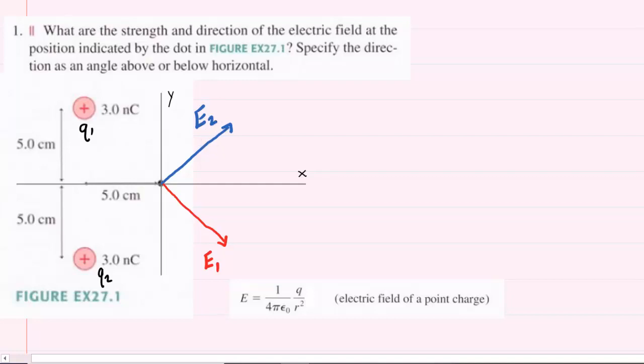After drawing in the electric fields, we want to consider the x and y components of those electric fields. For E1, we would have an x-component that's pointing along the positive x-axis, which we might call E1x. And then we have a y-component pointing down the negative y-axis, which we could call E1y.